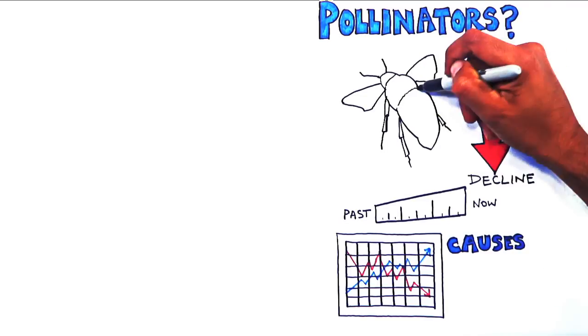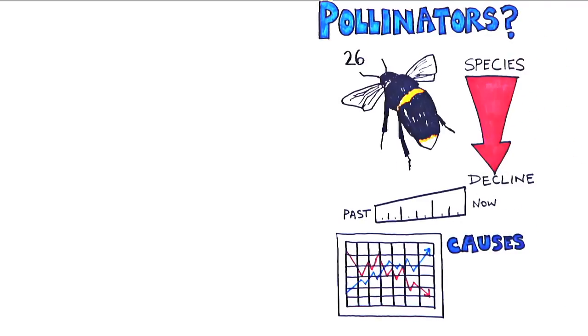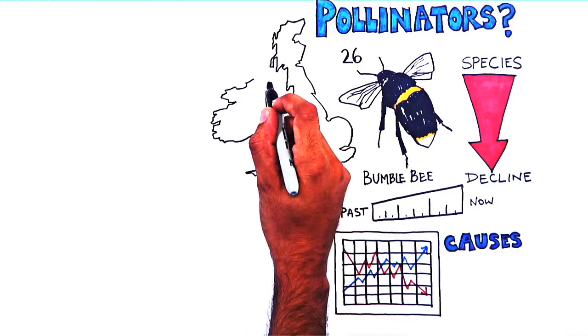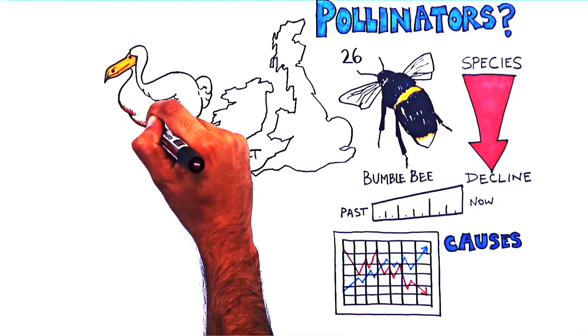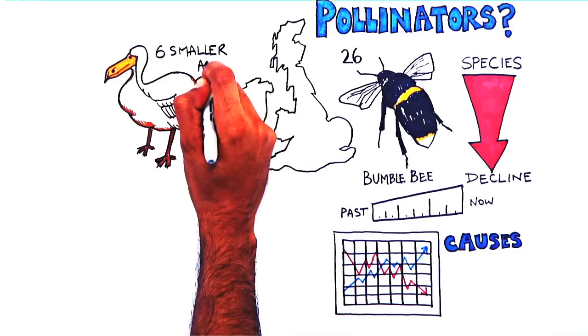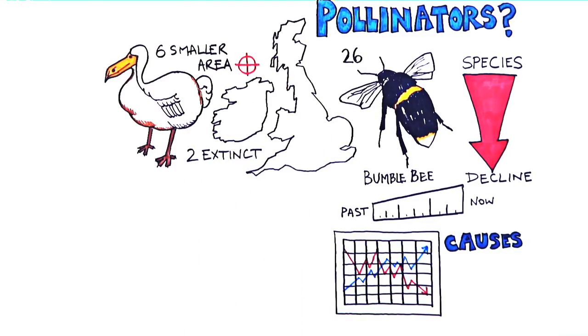For example, we do know that of the 26 bumblebee species in the UK, two have been declared extinct over the last century, and another six are now found in a much smaller area of the country.